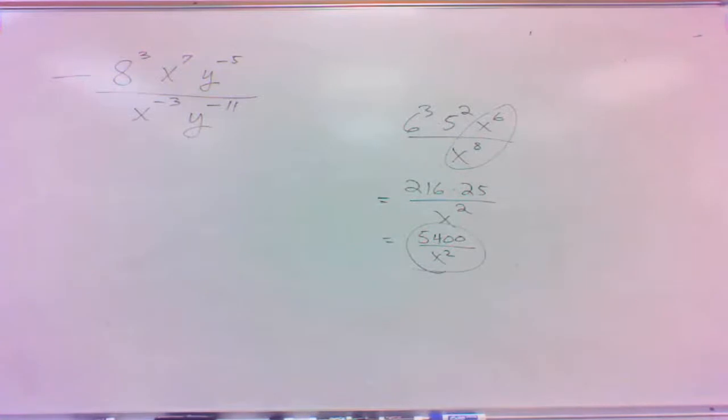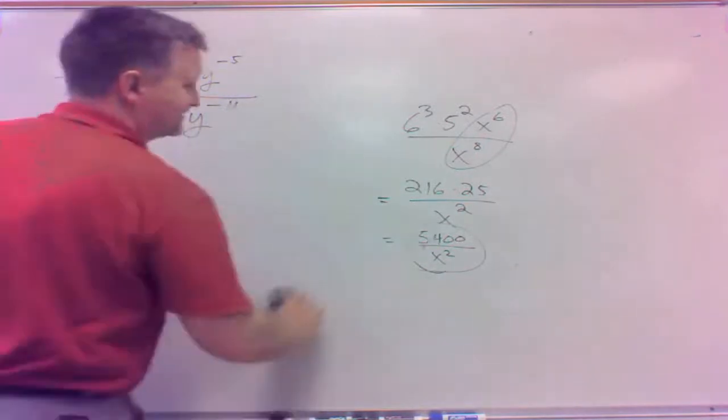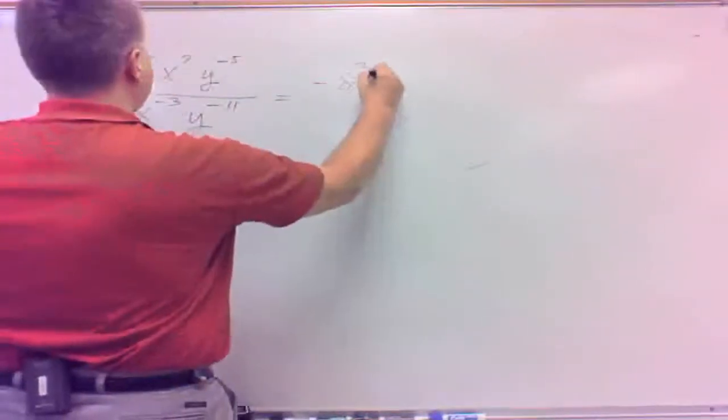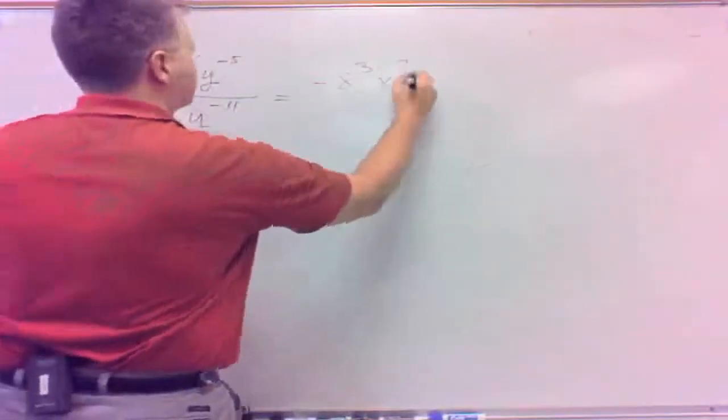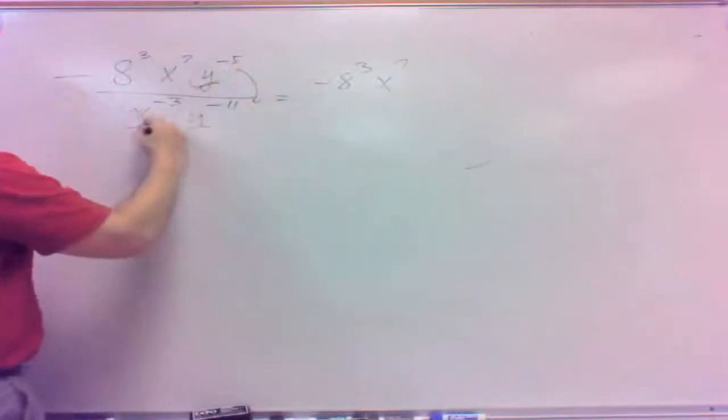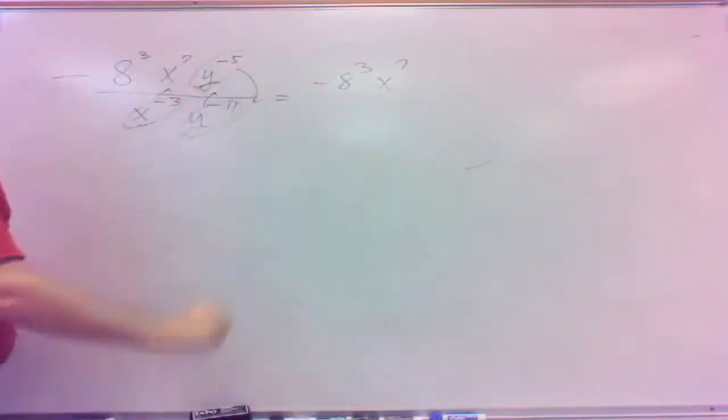With so many things running around there, I would suggest moving those negative exponents around. The negative exponent ones, we move those to the other place. If it's the negative exponent on top, move them to the bottom. If it's the negative exponent on the bottom, move it to the top.